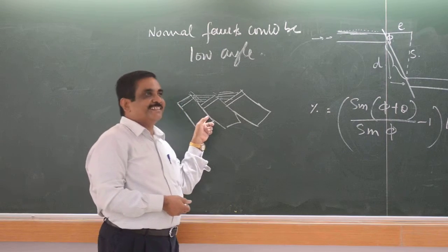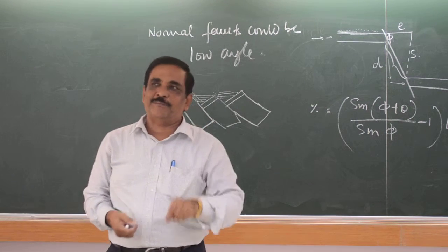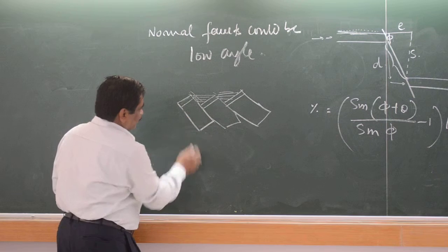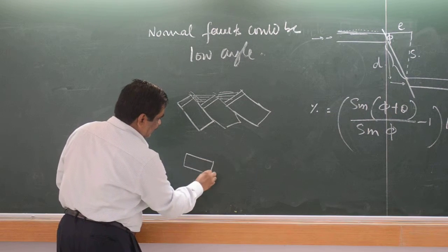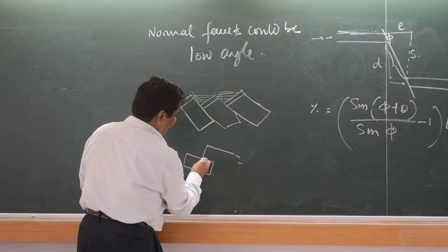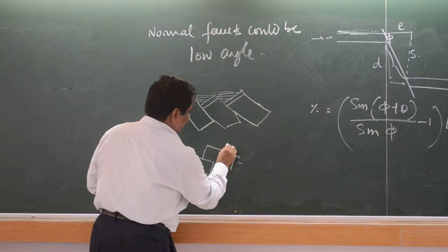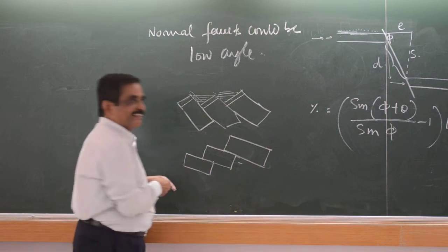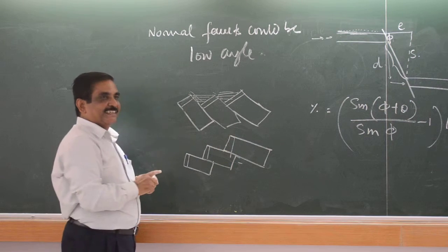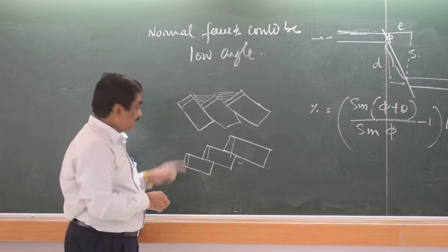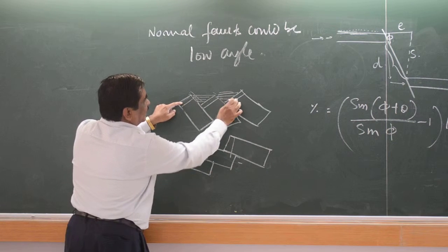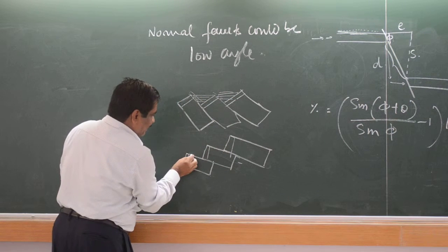Now, we are giving more and more extension. So the faulting is not stopping at that point of time — it is a continuous process. So the next stage of rotation will be what? This block will become like this, you see.